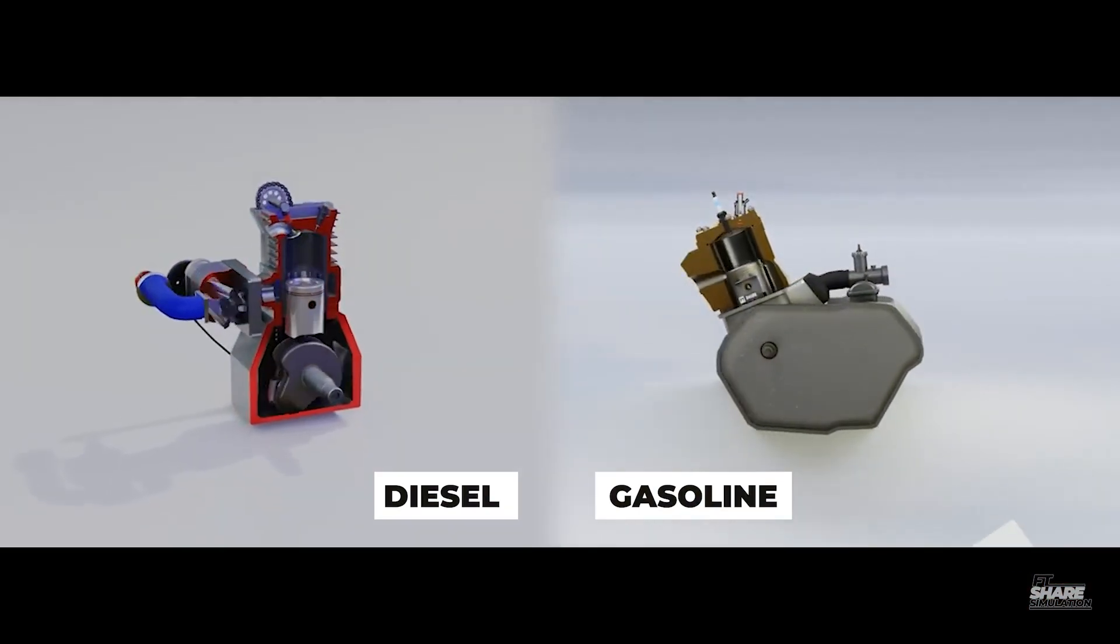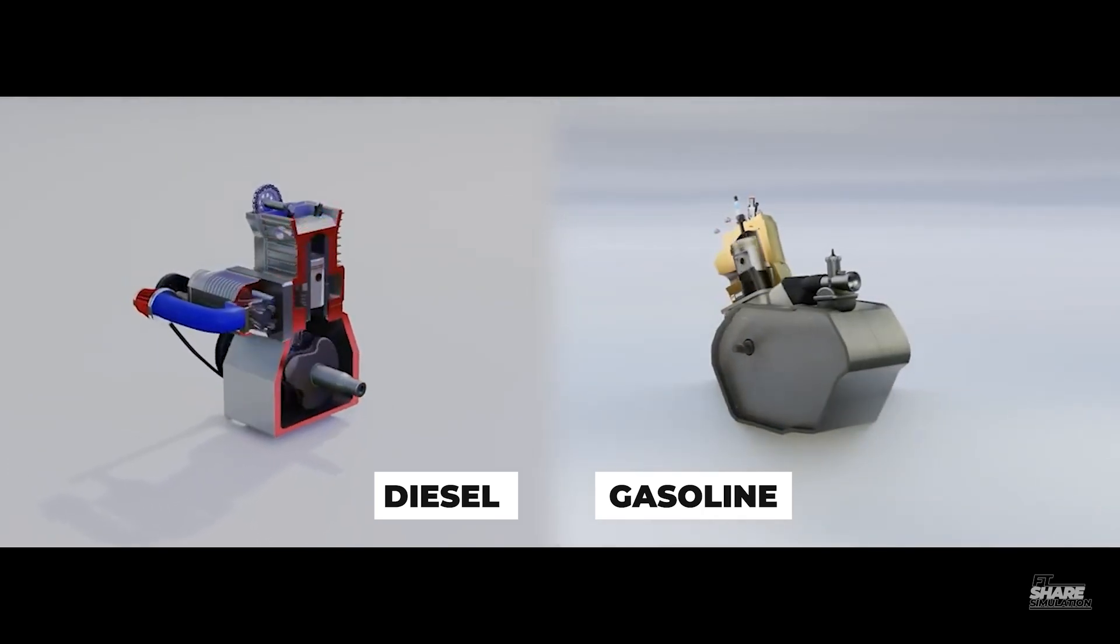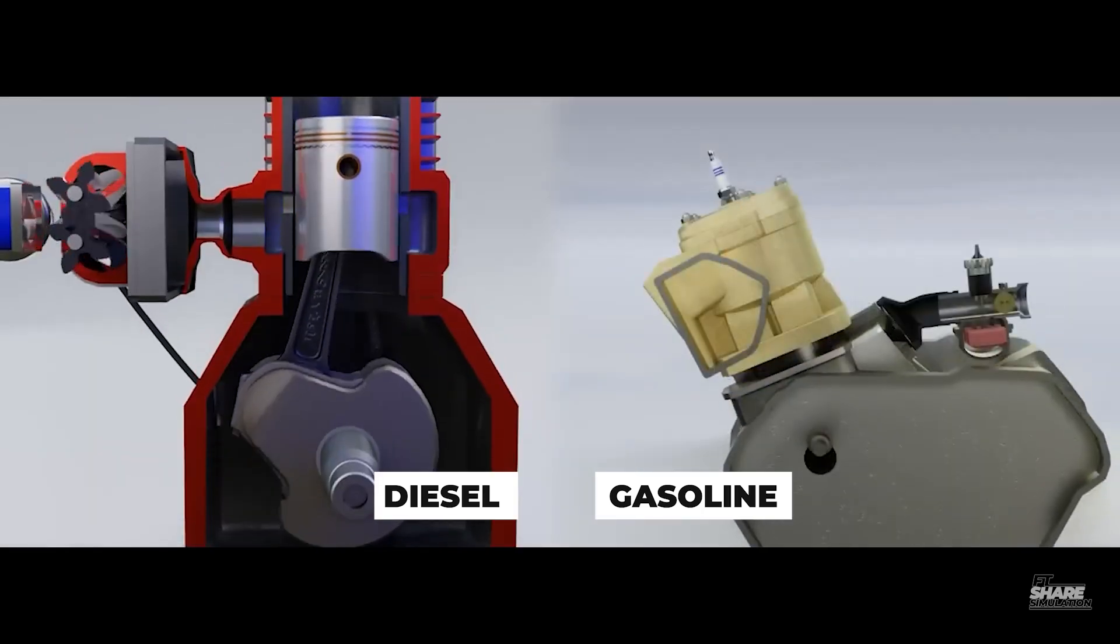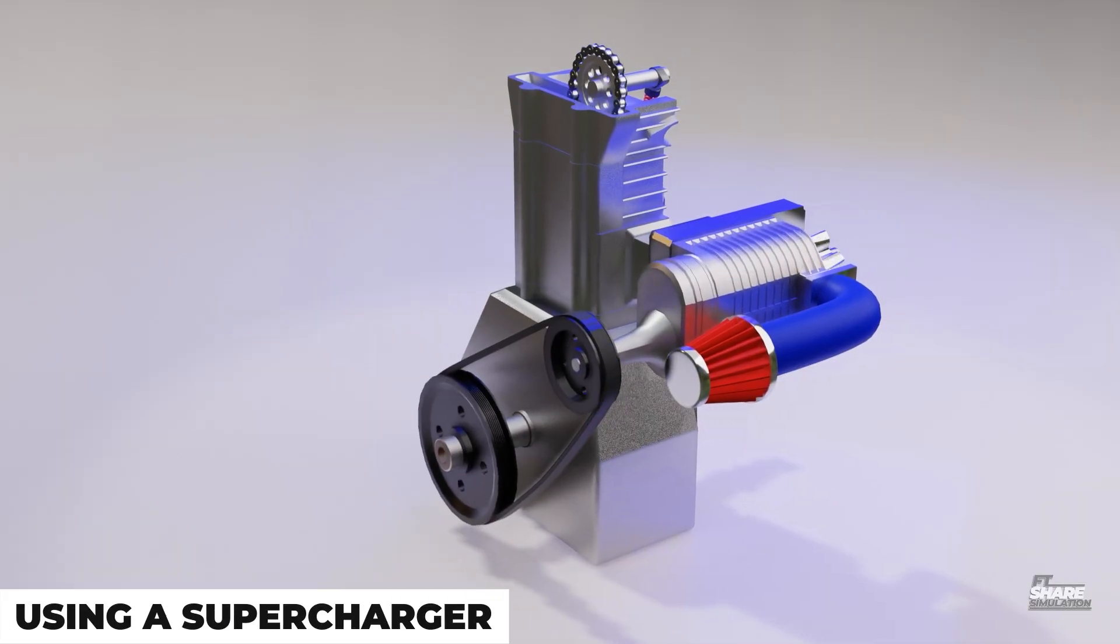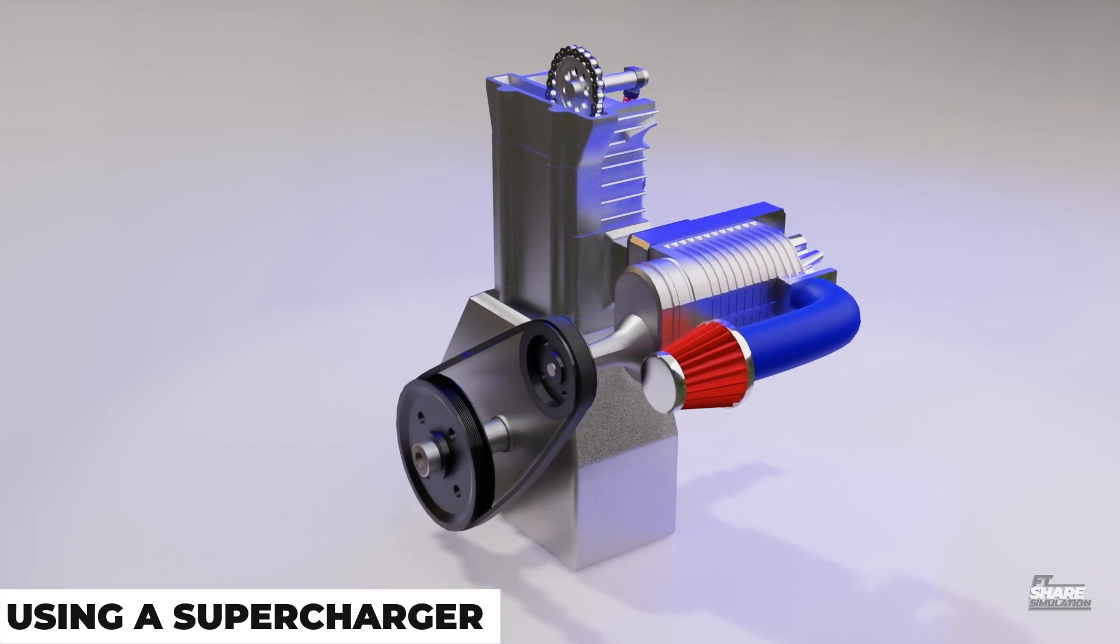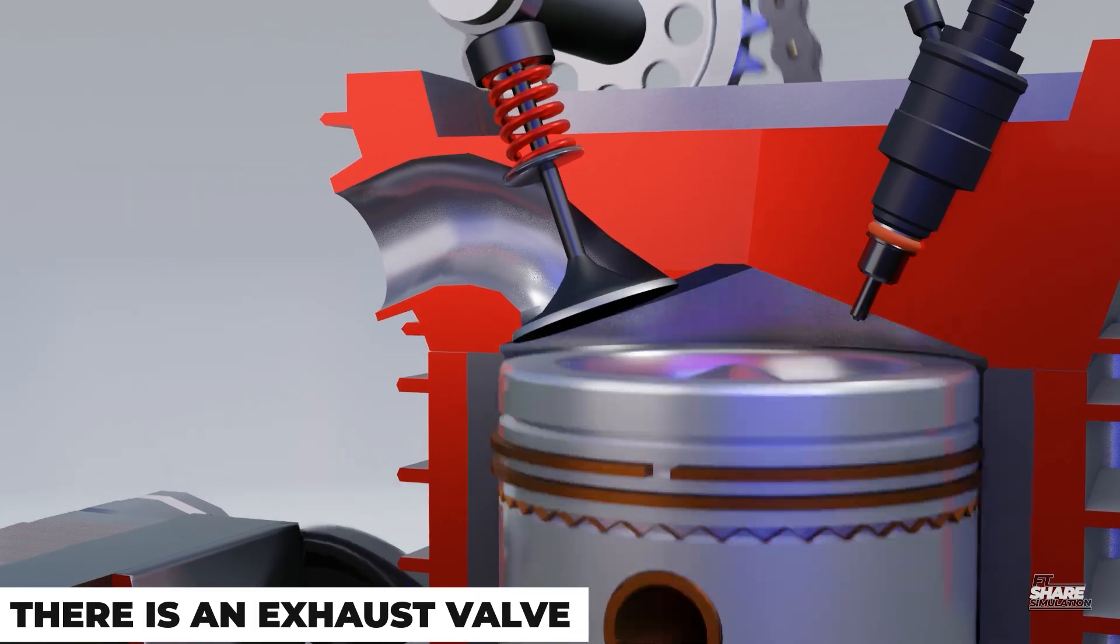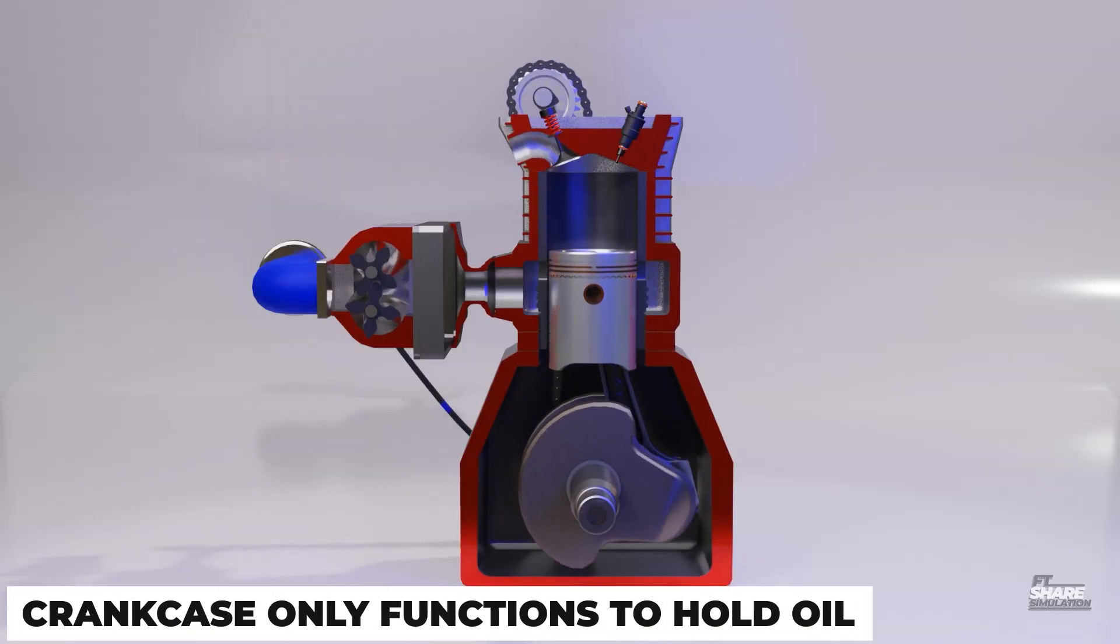Moving on to the components. In general, two-stroke gasoline and diesel engines have similar parts. The difference in the two-stroke diesel engine lies in the use of a supercharger to supply air into the combustion chamber, the use of valves, and a separate combustion chamber from the crankcase.